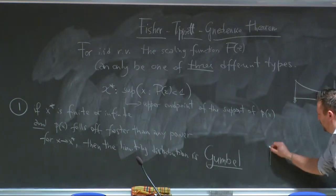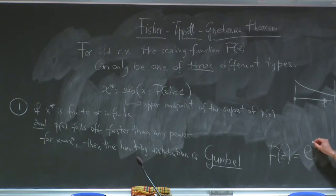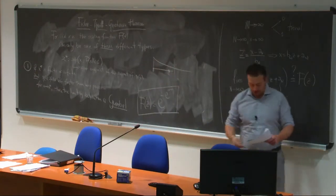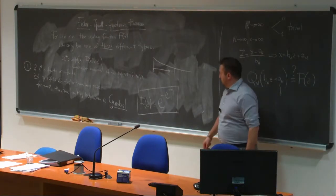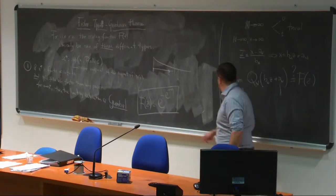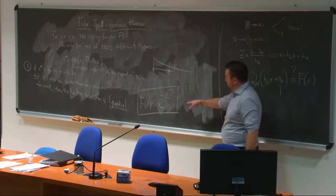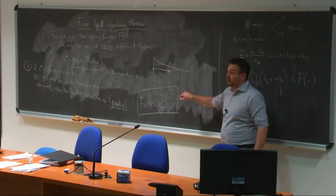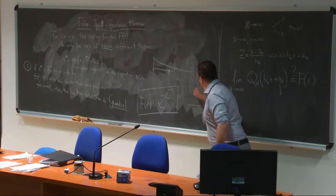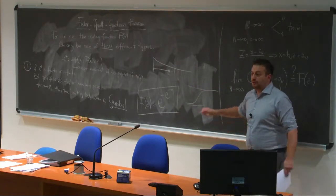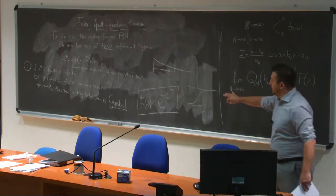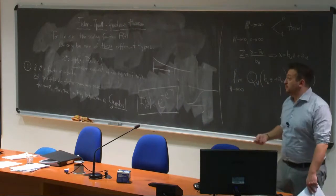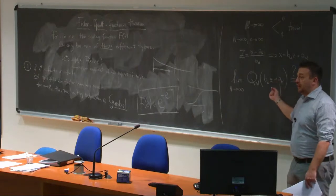The Gumbel distribution means f(z) = exp(−exp(−z)). This needs to be a cumulative distribution: as z → +∞ this object goes to 1, and as z → −∞ it goes to 0. This is a proper CDF, and it is the limiting distribution — for example, if your PDF is Gaussian or exponential, the distribution of the maximum will converge after being properly centered and scaled to a Gumbel distribution.